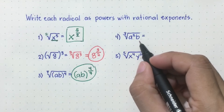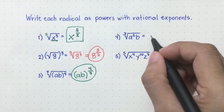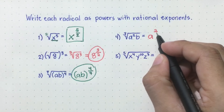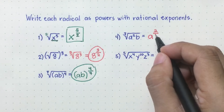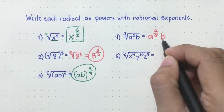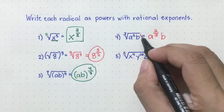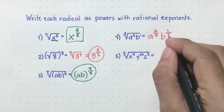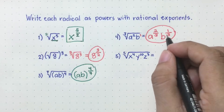How about this one? Cube root of a squared times b. Let's start with a. A has an exponent of two, so that two will be the numerator of the rational exponent, and the denominator will come from the index, which is three. Then for the variable b, since you cannot see the exponent of b, automatically it has an exponent of one. It means that one will be the numerator of the rational exponent, and the index three will be the denominator. So the answer is a raised to two-thirds and b raised to one-third.